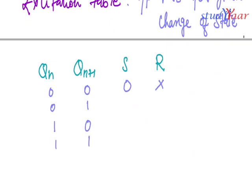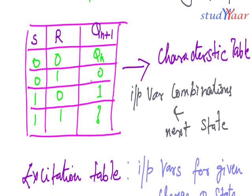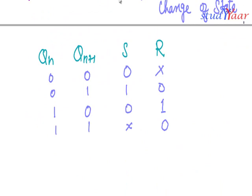The transition from zero to one requires S=1 and R=0. Transition from one to zero requires S=0 and R=1. And transition from one to one occurs when S=don't care and R=0. You can verify this from the characteristic table.